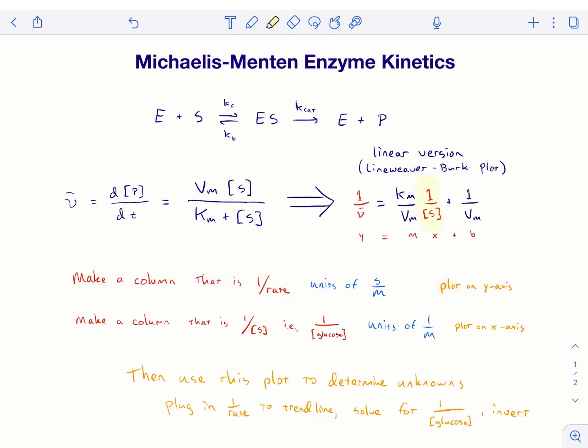And then, x is one over the substrate concentration. So, you take your glucose concentration. I suggest putting this in molar. So, you may have done it in millimolar. So, convert it back to molar and then invert it. And then, this gives you units of one over molar. And that's good because it matches. I mean, it'll work without it, but it's good to have your units match. So, you can make those match. This is what you have on your x-axis.